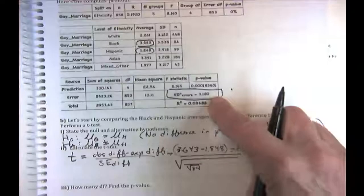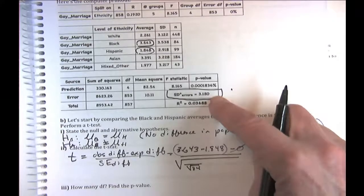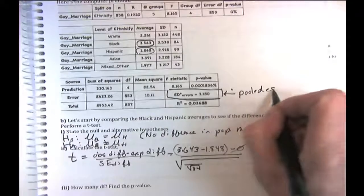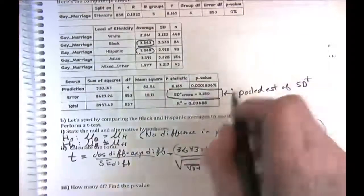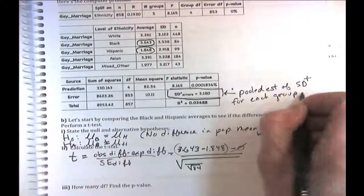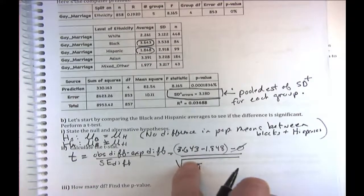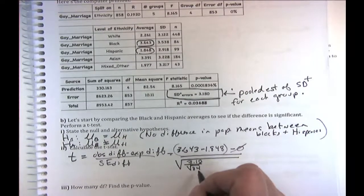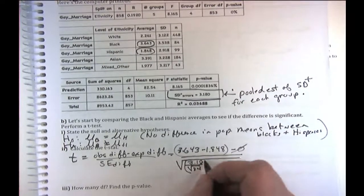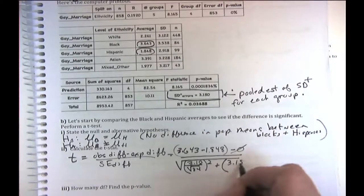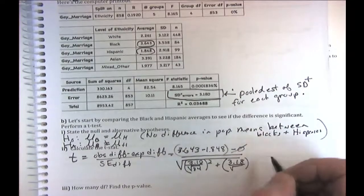Why do we adjust? To avoid cherry-picking — remember the Brian and ESP example. The p-values use two-tailed tests because we didn't specify a direction ahead of time — we're just looking for any difference.